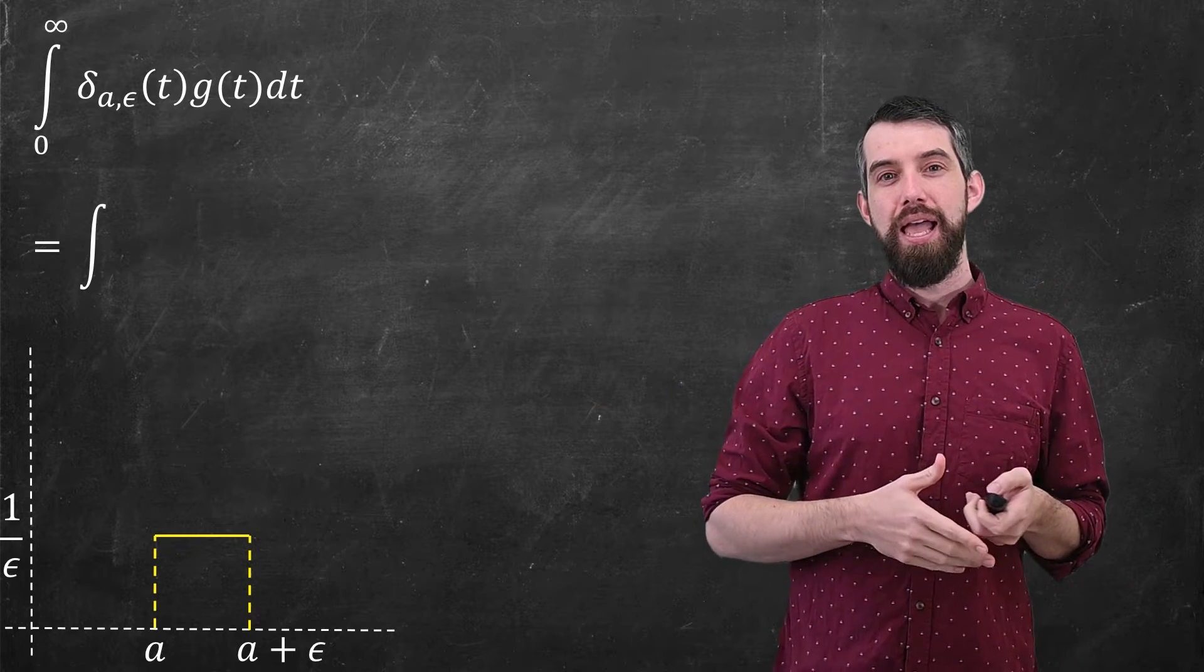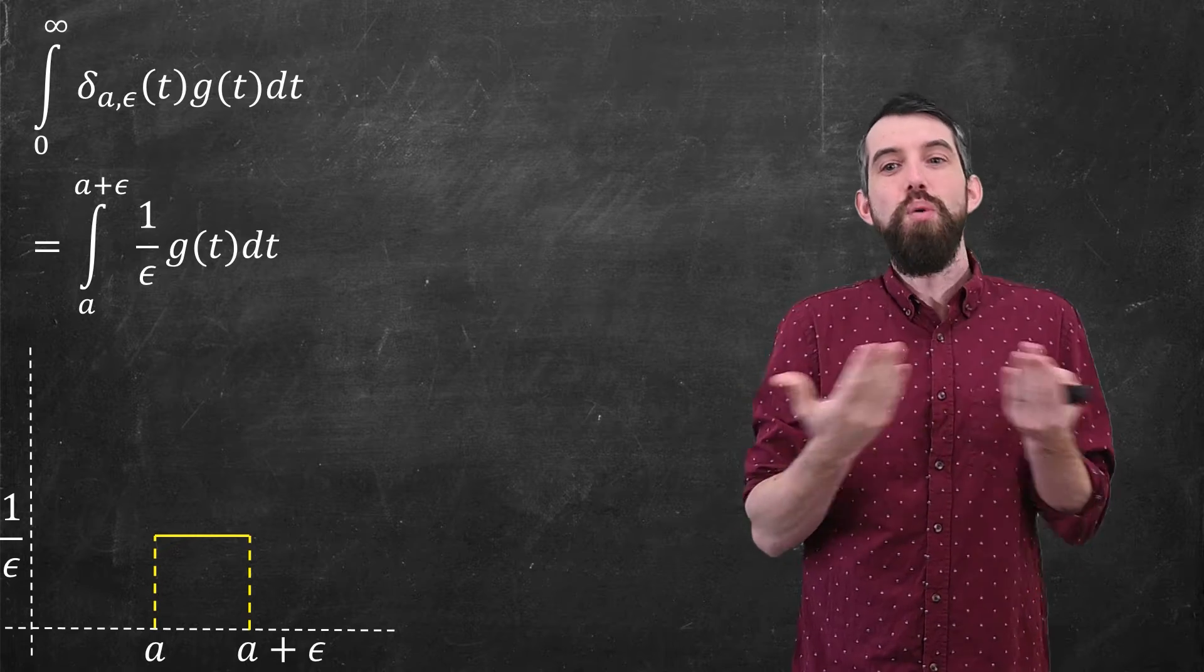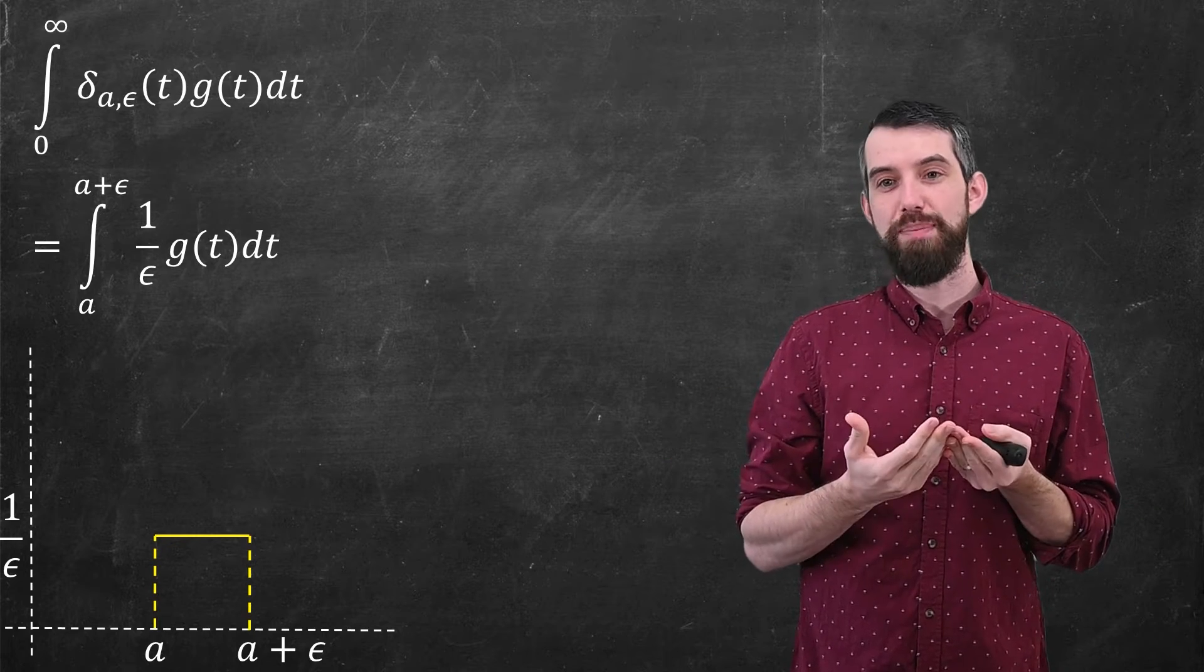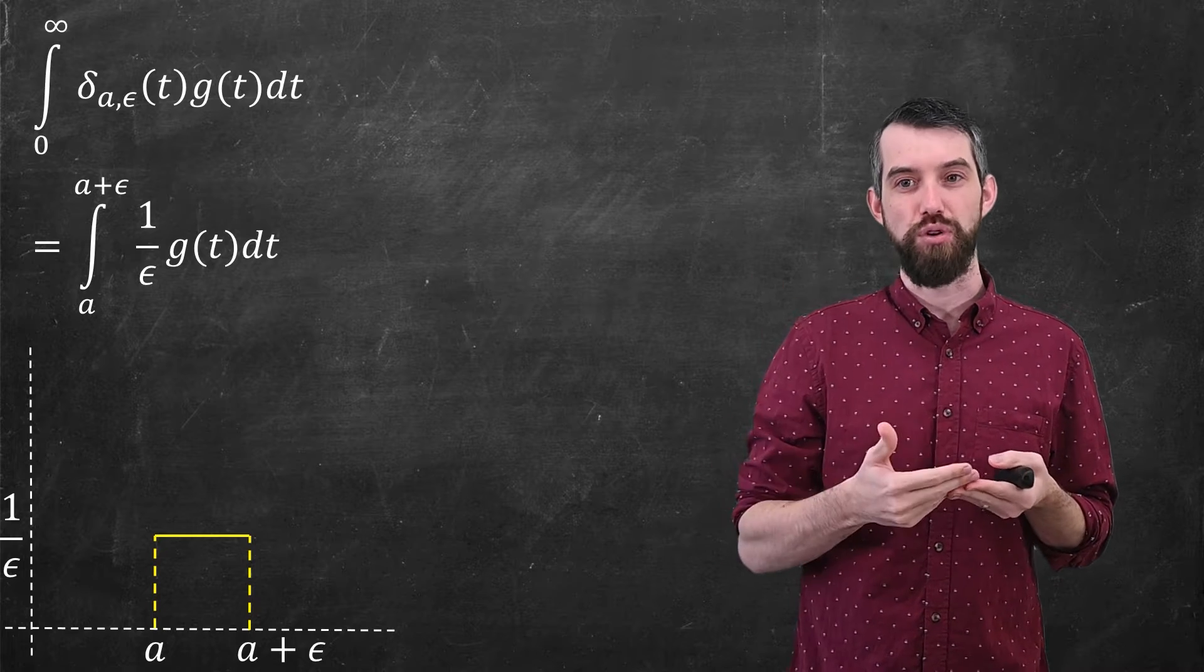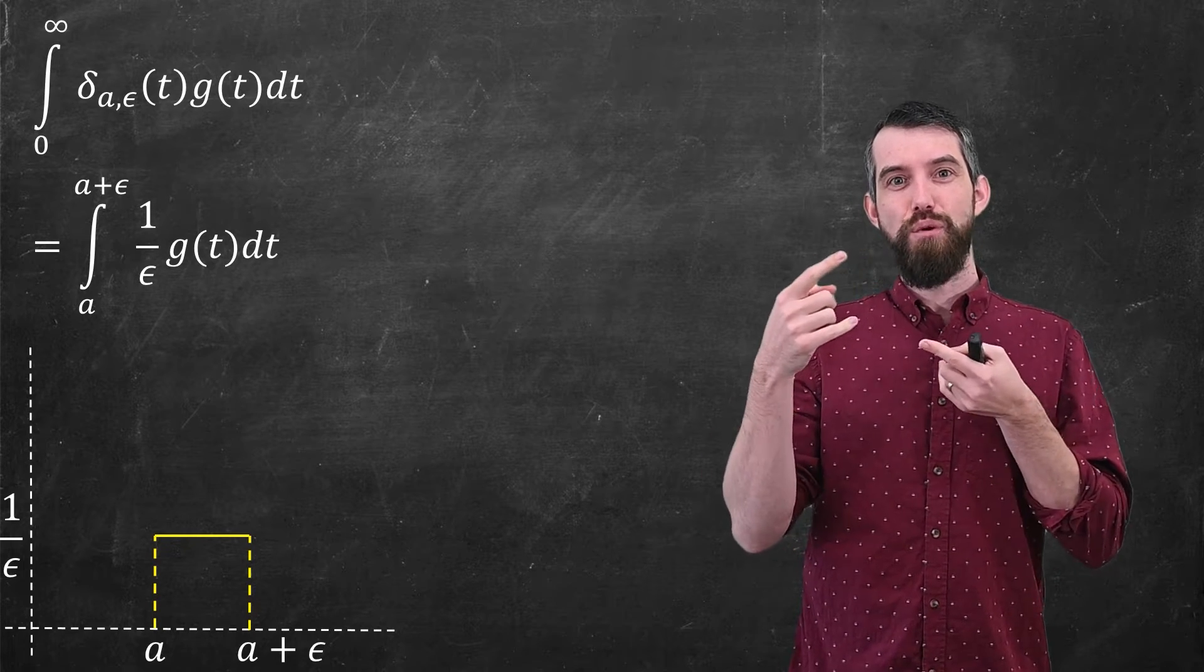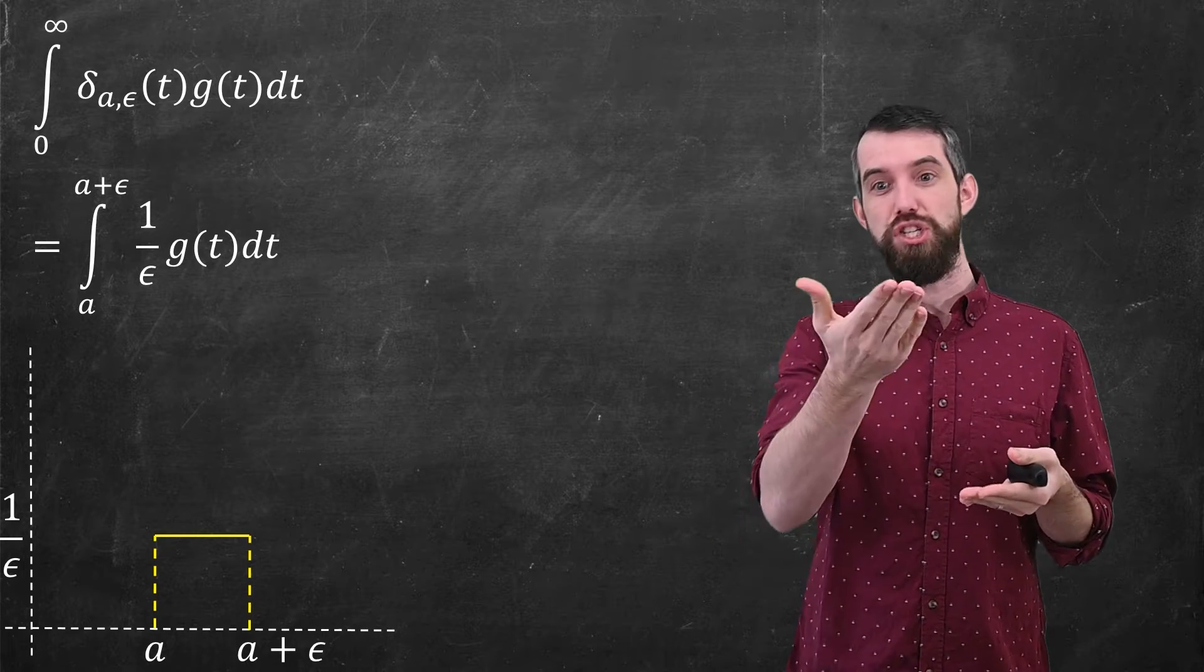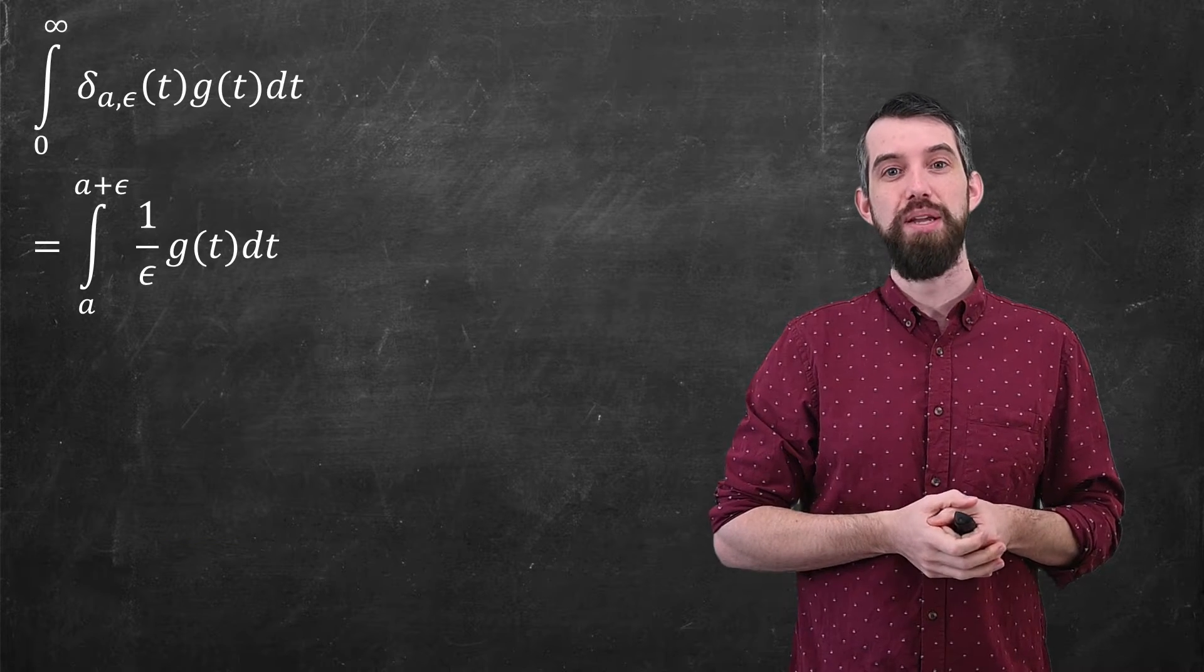Recall the graph as we saw earlier. And as a result of that, what it does is everywhere outside of a to a plus epsilon, it just makes it equal to zero. So I just get rid of that, and the improper integral just turns into an integral from a to a plus ε. And then for the height of the delta function, it would just define to be 1 over ε, so I'm going to put that in.